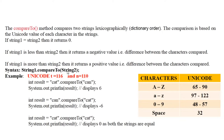Let us compare "cat" and "can". When these two strings are compared, it will return either a positive value, a negative value, or zero — finally returning an integer. That is the reason I have taken a variable called result with data type int.